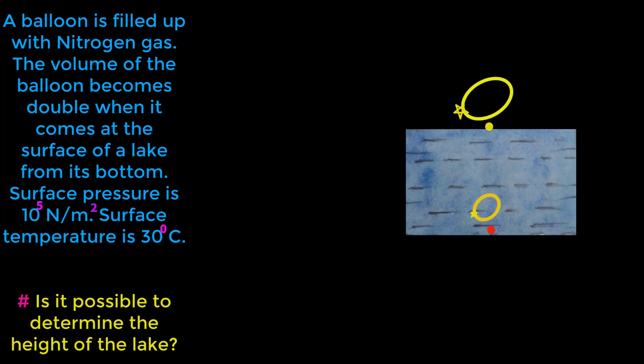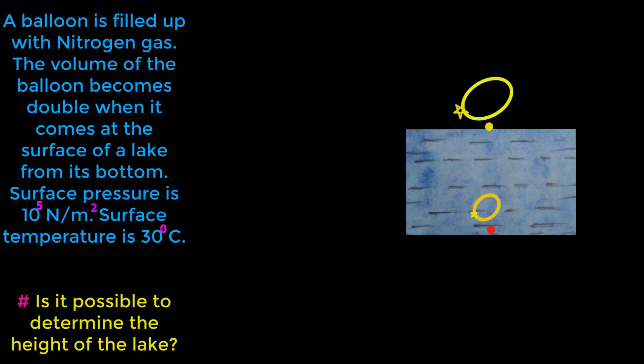Let us solve the math. A balloon is filled up with nitrogen gas. The volume of the balloon becomes double when it comes to the surface of a lake from its bottom. Surface pressure is 10 to the power 5 Newton per meter square, and surface temperature is 30 degrees centigrade. The question is: can we determine the height of the lake? The height H is the distance from the bottom to the surface — we have to determine the value of H.